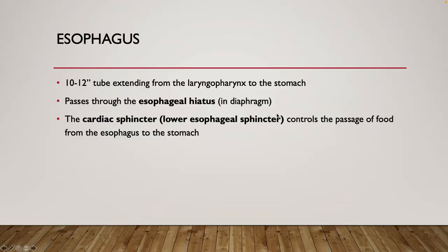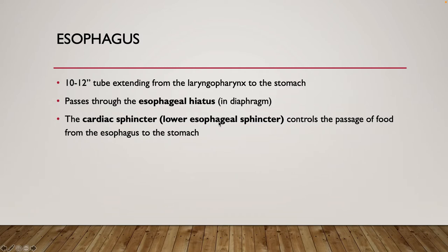Speaking of the esophagus, let's discuss a little bit about its anatomy. It's generally 10 to 12 inches long, and it extends from our laryngopharynx into our stomach. It has a point at which it pierces our diaphragm, the main muscle of respiration, at something called the esophageal hiatus, which is at the T10 vertebral level. There is a sphincter — a circular muscle known as the cardiac sphincter, also referred to as the lower esophageal sphincter — which opens and closes to allow food to enter the stomach from the esophagus.